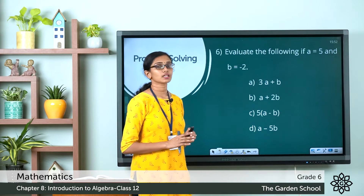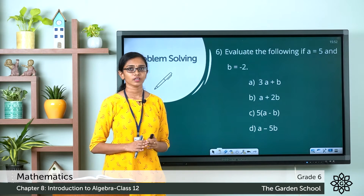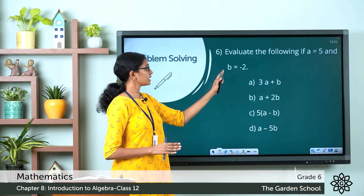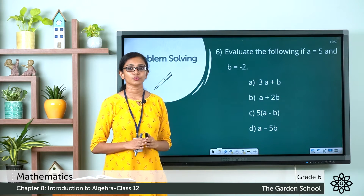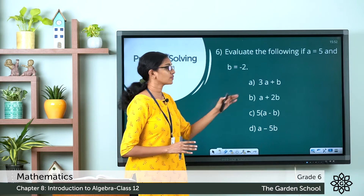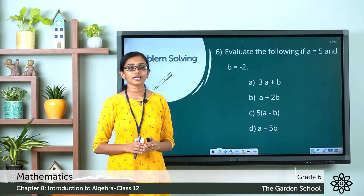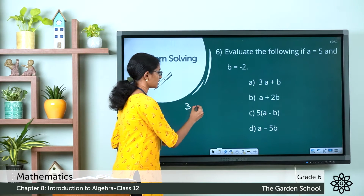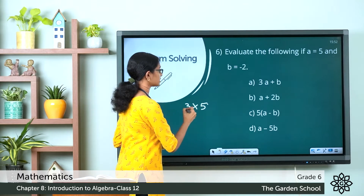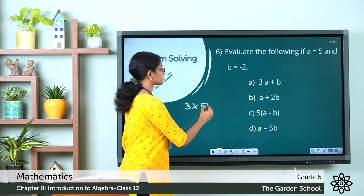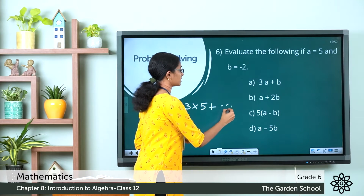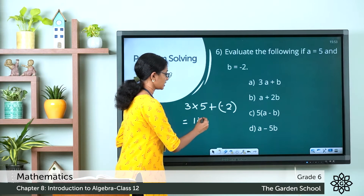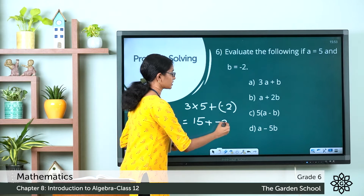For example, the first expression is 3a plus b. The value of variable a is equal to 5, and the variable b is equal to minus 2. Let's substitute these values: 3a plus b equals 3 into 5. 3a means 3 into 5, plus b which is minus 2. So this equals 15 plus minus 2.